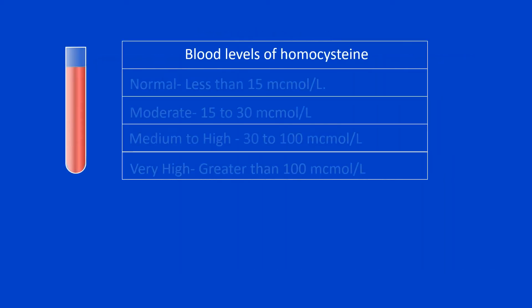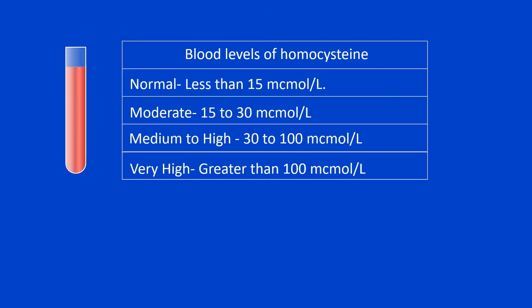Blood levels of homocysteine: Normal less than 15 micromoles per liter, Moderate 15 to 30 micromoles per liter, Medium to high 30 to 100 micromoles per liter, Very high greater than 100 micromoles per liter.